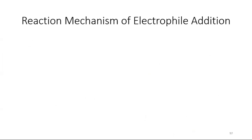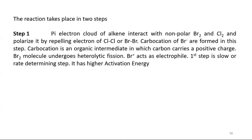If you want to talk about this reaction mechanism, this reaction takes place in two steps. Please write this down. So you can see Step 1: the electron cloud of Alkenes interacts with non-polar Br2 and Cl2 and polarizes it by labeling the electron of Cl or Br. Carbocation and Br negative are formed in this step.